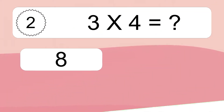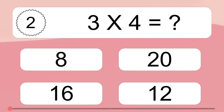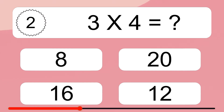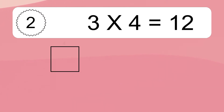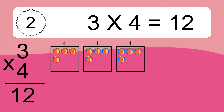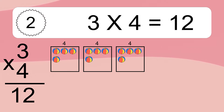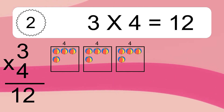Three times four equals what? Three times four equals 12. We have three boxes, and each box has four colorful balls inside. If you count all the balls in all the boxes together, you will have three times four balls. This equals 12 balls.